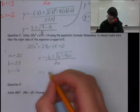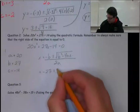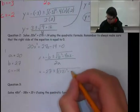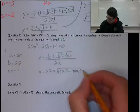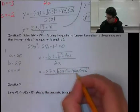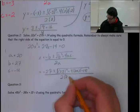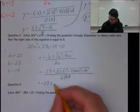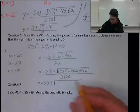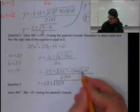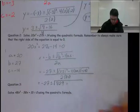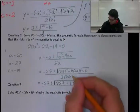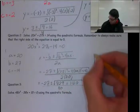So -b, which is 27, plus or minus the square root of b², so 27², minus 4a which is 20 times c which is -14. All over 2a, which is 20.